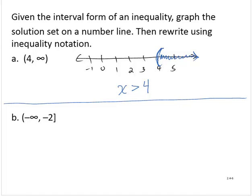(-∞, -2]. Again, let me start with a number line. The solutions go from negative infinity up to negative 2, so I'll shade from negative infinity up to negative 2.